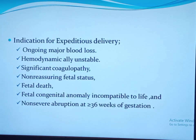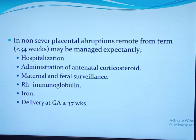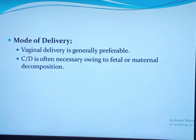Indications for immediate delivery include ongoing major blood loss, significant coagulopathy, non-reassuring fetal status, fetal congenital anomalies, and gestational age greater than 36–37 weeks. If there is no indication for expedited delivery, non-severe placental abruption remote from term can be managed expectantly as an inpatient, preferably in a tertiary hospital. Antenatal corticosteroids should be administered for fetal lung maturity between 24 and 34 weeks. Maternal and fetal surveillance, Rh immunoglobulin for Rh-negative women, iron supplementation, and tocolysis are important. Vaginal delivery is generally preferable; cesarean delivery is indicated for maternal and fetal decompensation or obstetric indications.